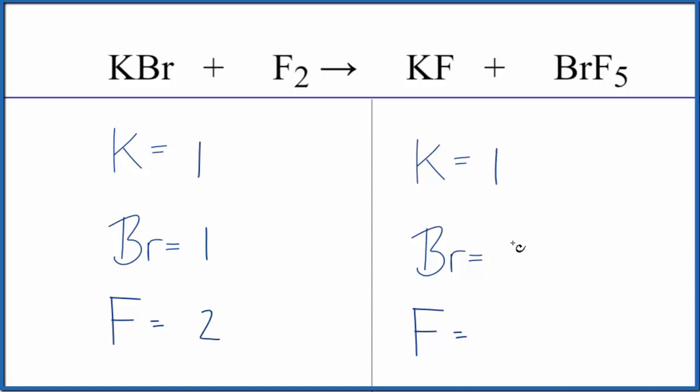But don't forget to count these five fluorines out here, that gives us six. And that makes this a pretty easy equation to balance if you count the fluorines up correctly.